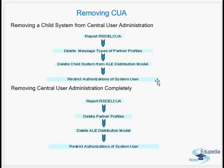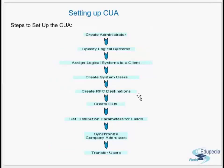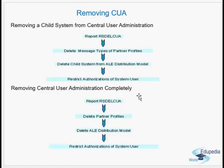When talking about ALE, we have partner profiles and distribution models. In those partner profiles you have ports — ports are nothing but RFC destinations logically. You delete those partner profiles and the distribution model from the central system for the particular child system you no longer want, and restrict authorizations of the system user.